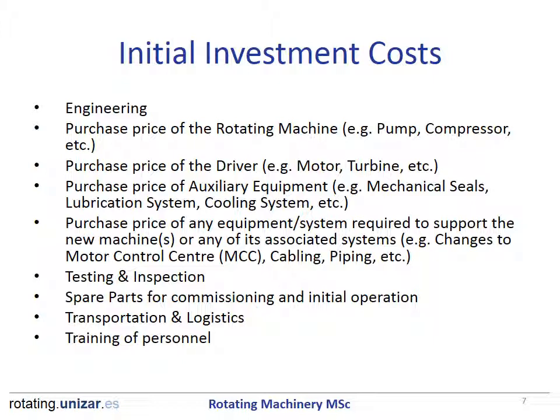Initial investment costs. Here we have a sample of the typical costs considered for the initial investment. The cost breakdown should be developed to identify the costs of each system or component. Sometimes the costs of some subsystems are not included by the main supplier. It is important to read and understand all documents, quotations, pricing lists, and contracts. When buying a rotating machine, you should never assume that a particular component is included in the price — always read the small print carefully.